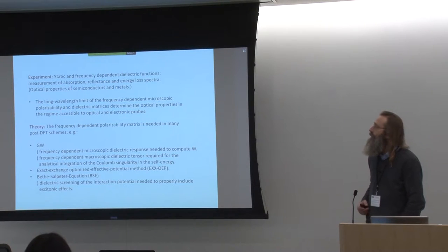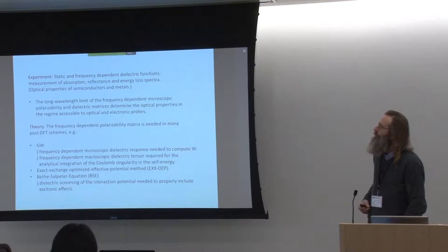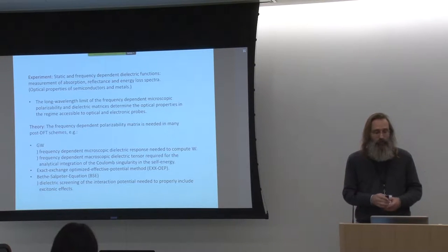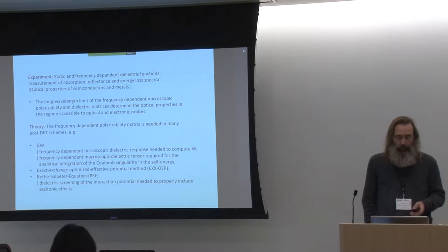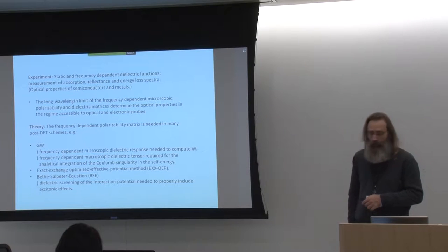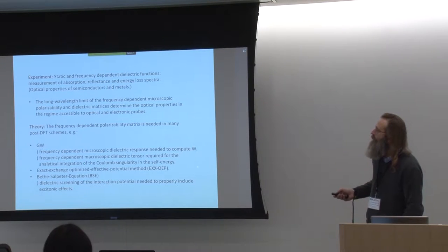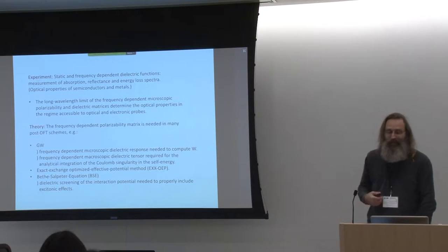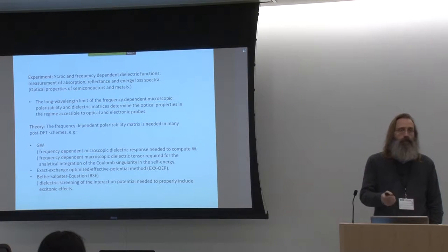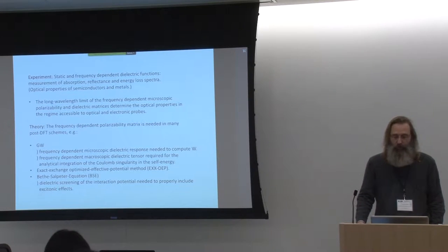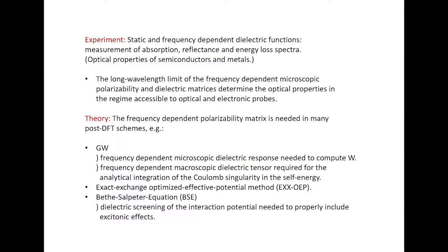These properties are also needed in several levels of theory that go beyond DFT and hybrid functional theory, most prominently GW. GW is a screened exchange interaction, and the screening applied there is not like in hybrid functional theory a simple quarter or something, but it's material-dependent and based on the computation of the frequency-dependent microscopic dielectric response. So we need these quantities to enter them into these higher-level methods.